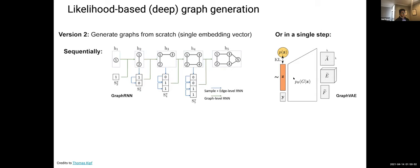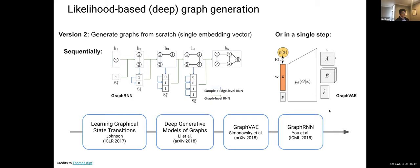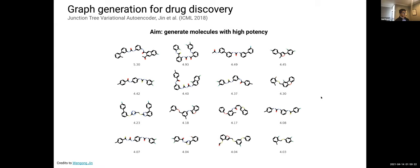We'll focus on this generation approach for drug discovery — specifically the Junction Tree Variational Autoencoder paper from MIT in 2018 by Wengong Jin and Regina Barzilay's lab. The aim is to generate de novo molecules with high potency — molecules that exist in molecular latent space but haven't necessarily been synthesized or characterized.